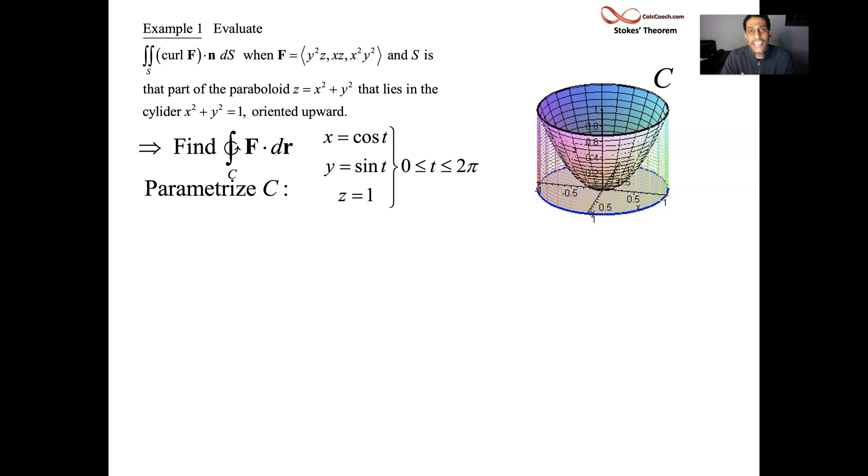So we're going to let x equal cosine t and y equals sine t. Normally, we say like x equals r cosine t, but r is one. r is a constant on that curve. So x is cosine t, y is sine t, and z is one. t goes from zero to two pi to give us our counterclockwise orientation. They say that the surface is oriented upward, so that's going to give us our counterclockwise orientation using a right hand rule.